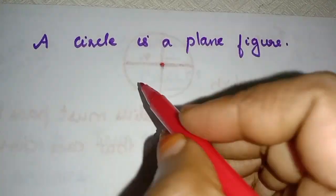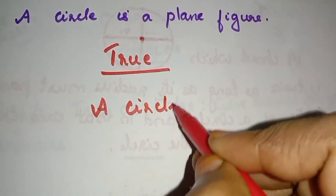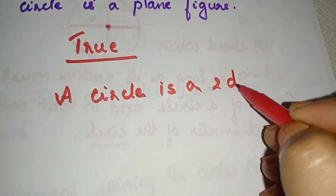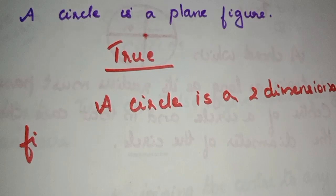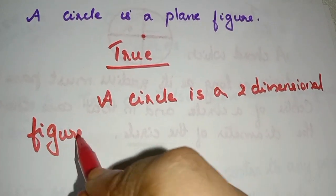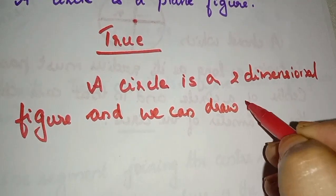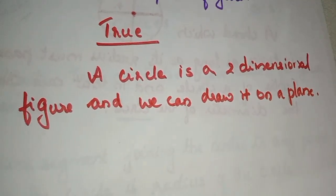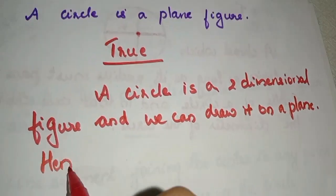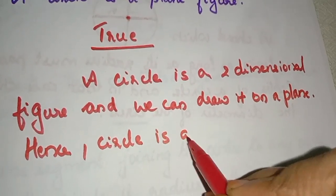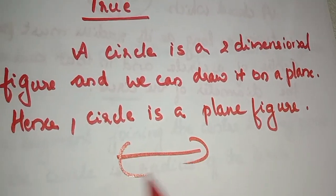Next question: A circle is a plane figure. Yes, a circle is a plane figure. A circle is a two-dimensional figure. We can draw it on a plane. So a circle is a plane figure — True.